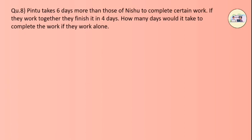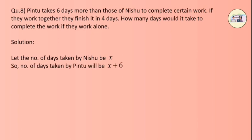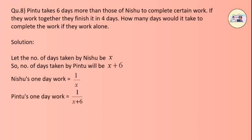Question 8: Pintu takes 6 days more than Nishu to complete a certain work. If they work together, they finish it in 4 days. How many days would it take each to complete the work alone? Let the number of days taken by Nishu be x, so the number of days taken by Pintu is x + 6. Nishu's 1-day work = 1/x, Pintu's 1-day work = 1/(x + 6). Work done together in 1 day = 1/4.